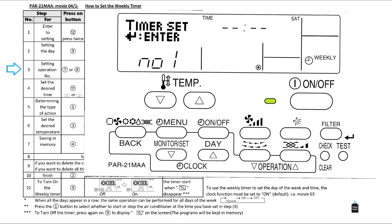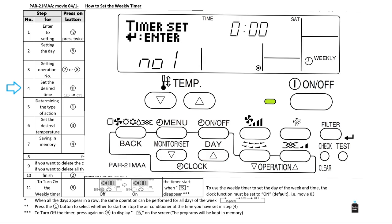Step four: Set the desired time of the operation by the clock buttons. Longer press for 10 minutes and one hour increments.